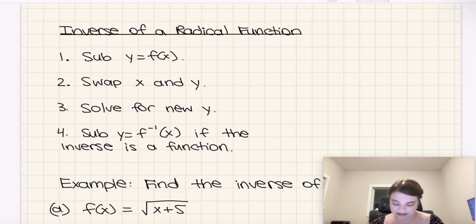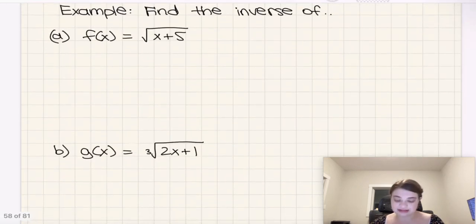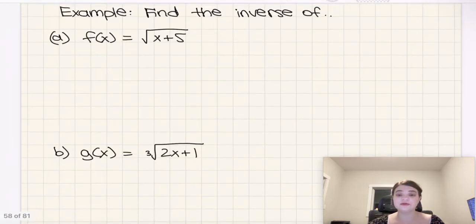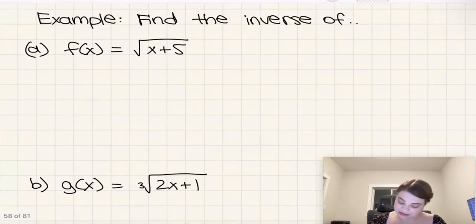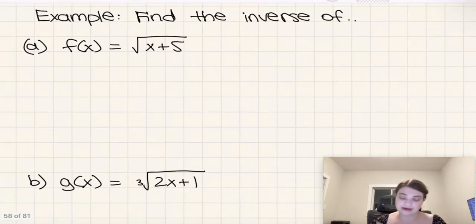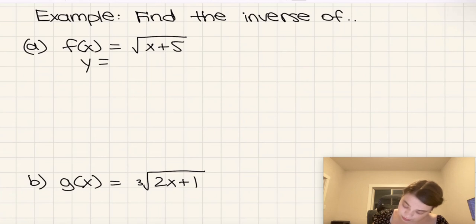Okay, so let's do a couple examples. Let's first find the inverse of f of x equals the square root of x plus 5. So first let's follow those steps, and then I'll also talk about the restriction on the domain and range, if applicable, and why that's the case. But first, let's just find the actual inverse before we get into that. So first step is to plug in y for f of x, which will get us y equals the square root of x plus 5.